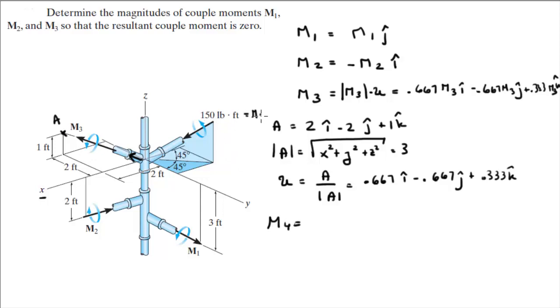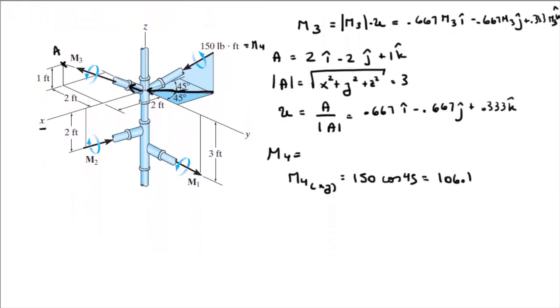M4, I'm calling this one M4 by the way. M4 has a magnitude of 150 pounds per foot. So how do we find M4? The first thing we're going to do is find this projection right here. That projection we're going to call M4 in the x and y plane because it's a projection in the x and y plane. To find that projection, it equals 150 times the cosine of 45 because it's the angle given right here, and it comes out to be 106.1.